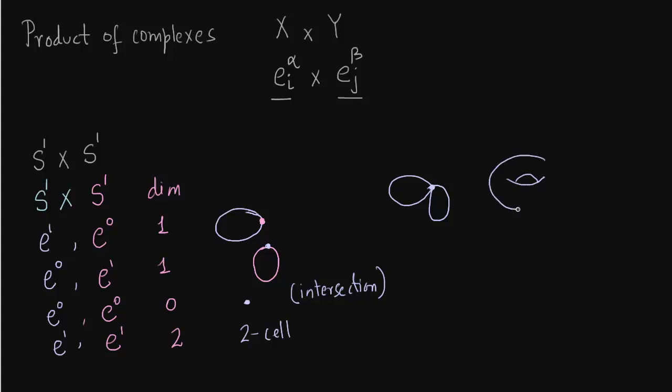Let me color code it so this is clear. This generator is this part. The second generator, I'm going to color code it, is this part.